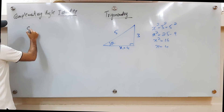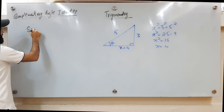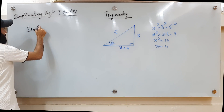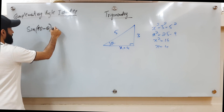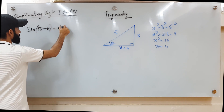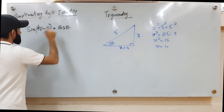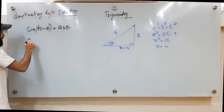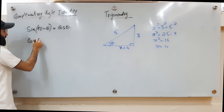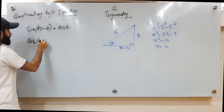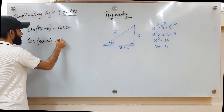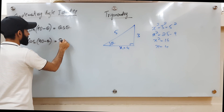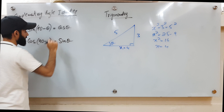Keep your calculators handy so we can cross-check. The identity states that sine(90° − θ) = cos θ, and cos(90° − θ) = sin θ.